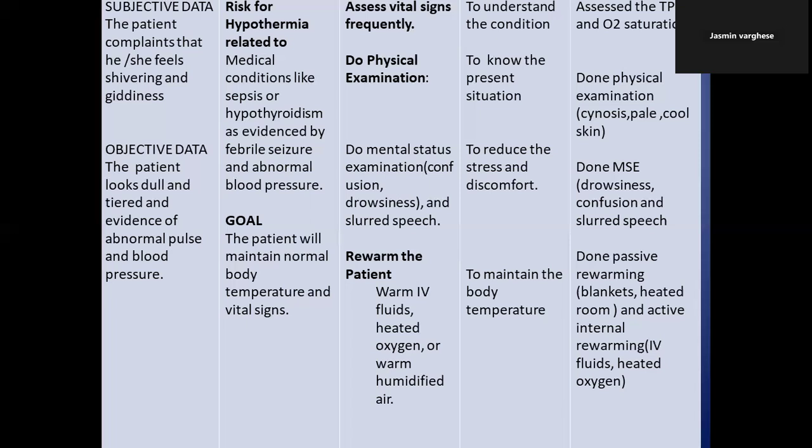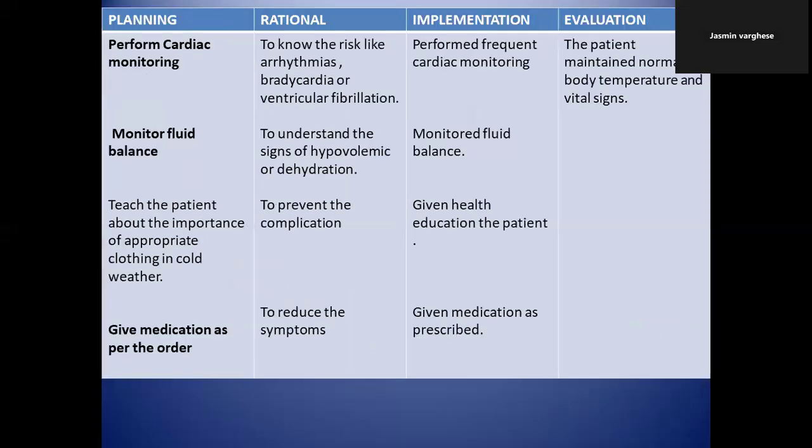The main aim is to rewarm the patient. You can give warm IV fluids, heated oxygen, or warm humidified air depending on the patient's condition — passive rewarming like blankets and a heated room, or active internal rewarming like IV fluids and heated oxygen. Also perform cardiac monitoring — very important — because in hypothermia you will see abnormal blood pressure, abnormal pulse, and there are chances of impaired cardiac function such as arrhythmias, bradycardia, or ventricular fibrillation.